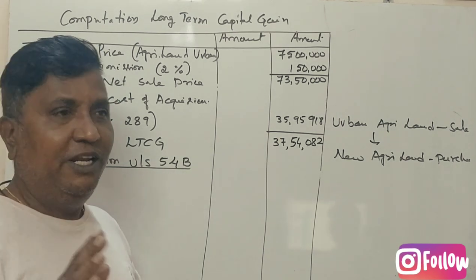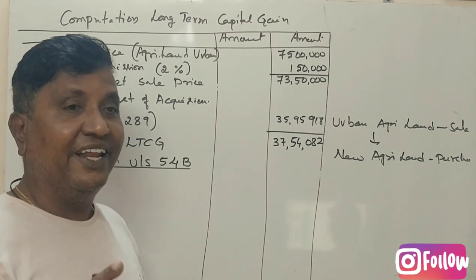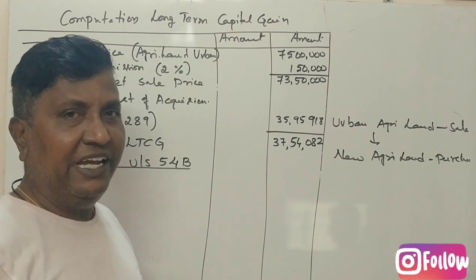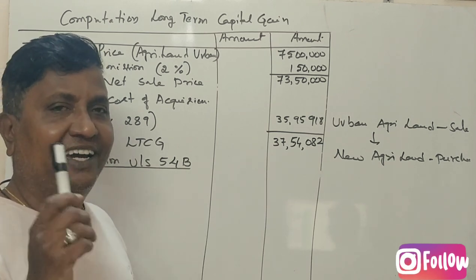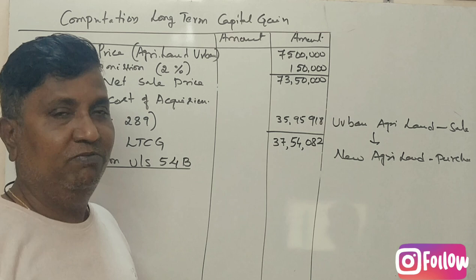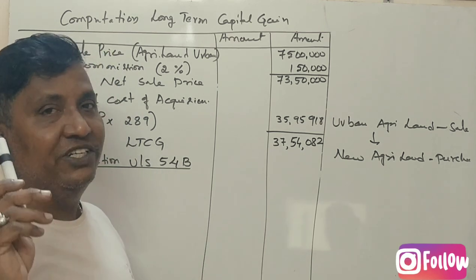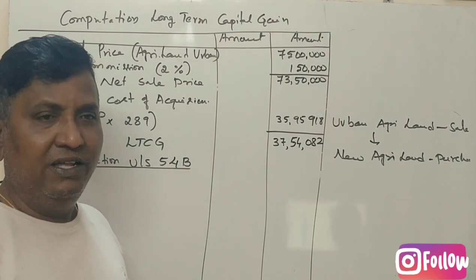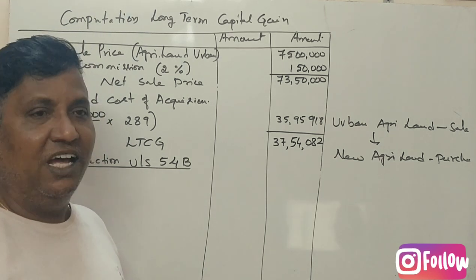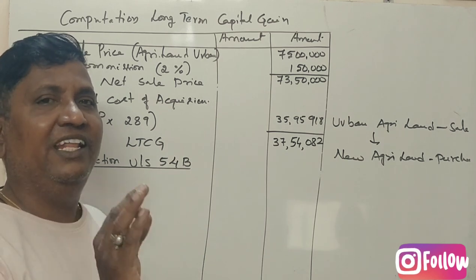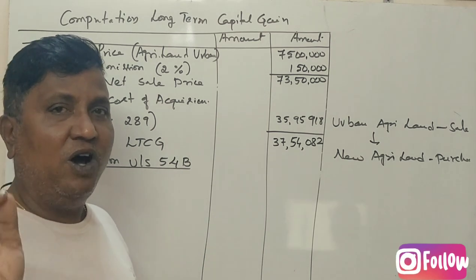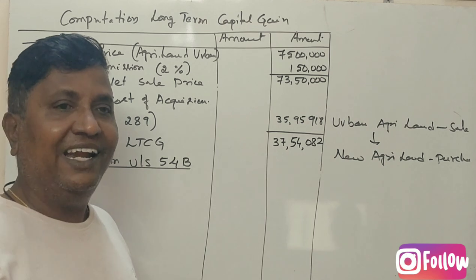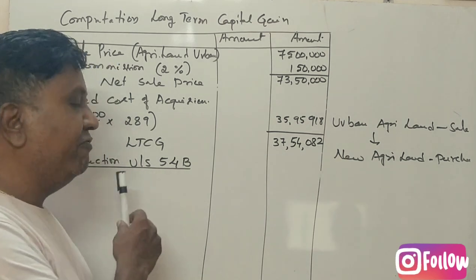One condition: this urban agricultural land must have been used for agricultural operations for at least 2 years. If the land has been used for agricultural operations for 2 years or more, you can claim deduction under Section 54B.